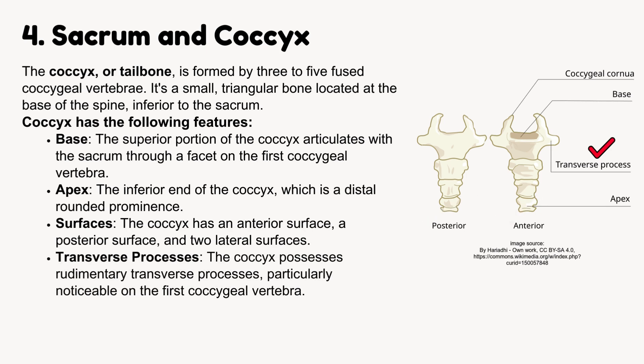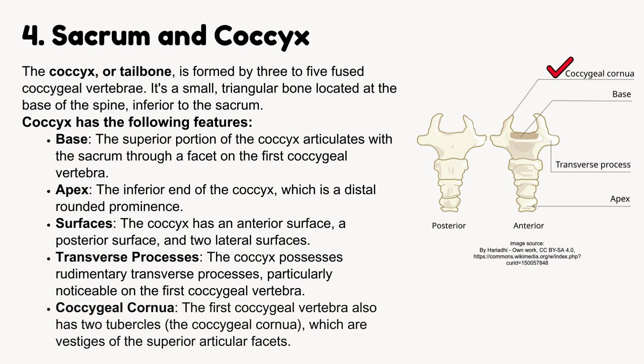Transverse processes: the coccyx possesses rudimentary transverse processes, particularly noticeable on the first coccygeal vertebra. Coccygeal cornua: the first coccygeal vertebra also has two tubercles, the coccygeal cornua, which are vestiges of the superior articular facets.